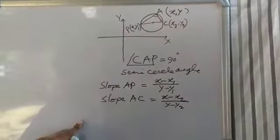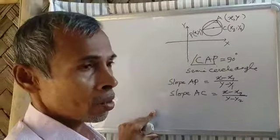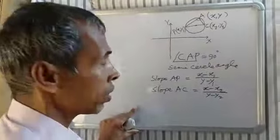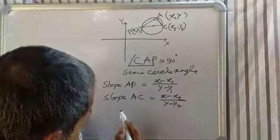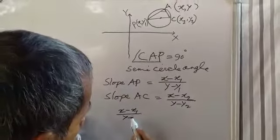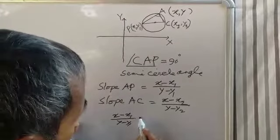Condition of perpendicularity: product of two slopes equal to minus 1. Therefore (x minus x1) by (y minus y1) into (x minus x2) by (y minus y2) equal to minus 1. Note this step because condition of perpendicularity, product of two slopes equal to minus 1.